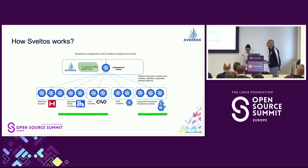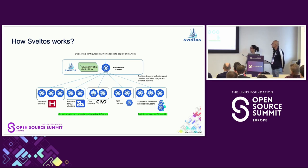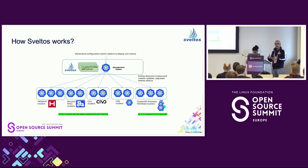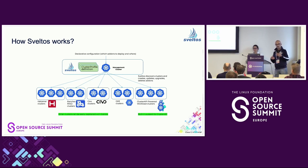Sveltos is an add-on management tool that runs in the management cluster, and from the management cluster it can manage add-ons and applications in a fleet of clusters. It has built-in support for Cluster API — if you have Cluster API running in the management cluster and use it to create on-demand Kubernetes clusters, Sveltos automatically detects those clusters and can deploy add-ons and applications on them with no extra action needed on your side.